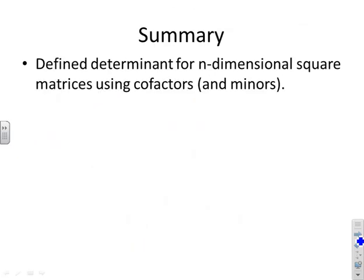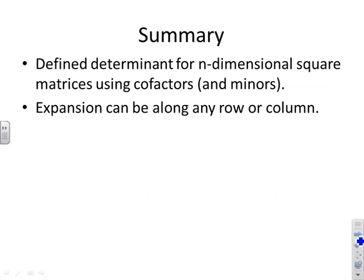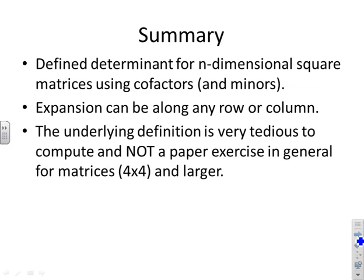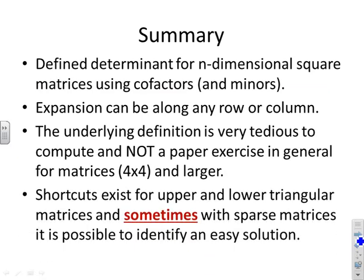So a summary. We defined the determinant of n-dimensional square matrices using cofactors and minors. Expansion can be along any row or column. And the underlying definition, however, is tedious to compute and not a paper exercise in general for 4x4 matrices and larger. However, this is a key point. Shortcuts do exist for upper and lower triangular matrices. And sometimes, with sparse matrices, you can identify an easy solution by choosing the right column or row for your expansion.